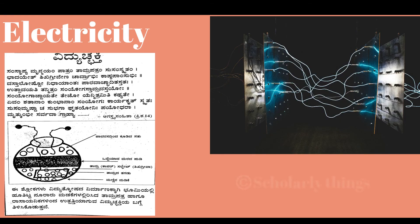It is believed that when a cell is prepared according to Agasthya Samhita and measured, it gives an open circuit voltage of 1.138 V and a short circuit current of 23 mA.